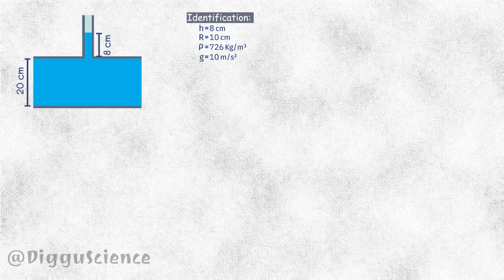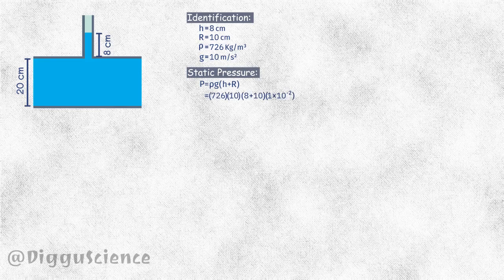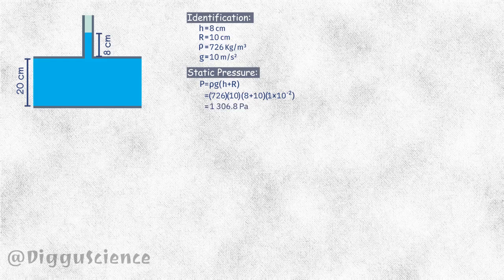So now we can calculate the static pressure: p is equal to rho g h plus r. Enter all identified values. This value is equal to 1306.8 pascals or 1.3 kilopascals.